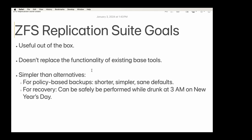I wanted something simpler than the alternatives. For policy-based backups, I basically wanted one snapshot per line, and the replication tool figures out where to place it with smart overrides. For recovery, I wanted something that can be safely performed while drunk at 3am on New Year's Day — ZFS replications can be really tricky, and you can be totally overwhelmed with thousands of snapshots.